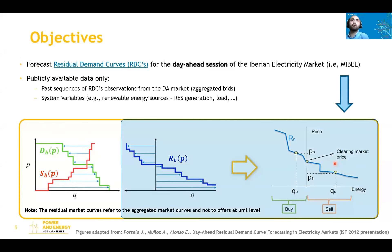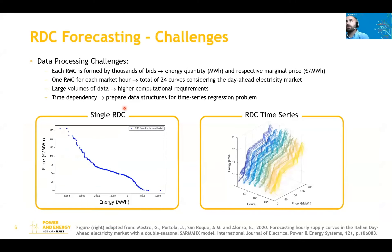Our goal is to predict these residual demand curves using exclusively publicly available data — historical sequences of residual demand curves and system information such as renewable energy generation, conventional generation, and system load. Each residual market curve is formed by thousands of bids, so gathering large amounts of data scales up quickly, potentially requiring manipulation of millions of data points. This is particularly challenging when working with time-dependent data and structures such as LSTMs in TensorFlow or Keras.